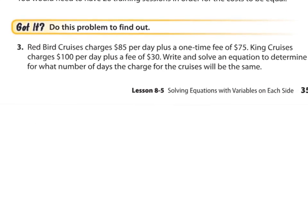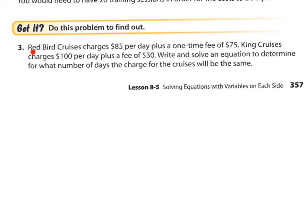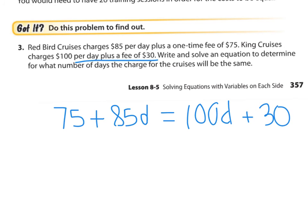Well, let's try this one, number three. Let's read it together and then pause to try to solve it on your own, and then check your answer by pressing play. Redbird Cruises charges $85 per day plus a one-time fee of $75. That looks to me like it's going to be $75 plus $85 per day. I'm going to use D as my variable because it's per day. King Cruises charges $100 per day and a fee of $30. You see, that's where I write it right here. Write and solve an equation to determine for what number of days the charge for the cruises will be the same. There it is. As I read it, I wrote it out, and I hope that made sense to you.